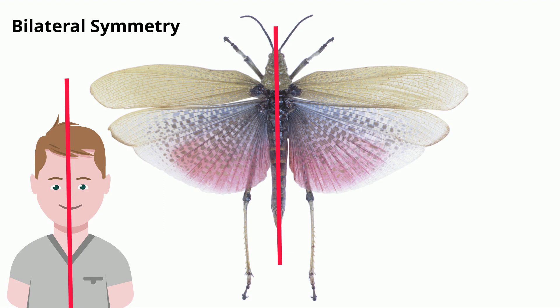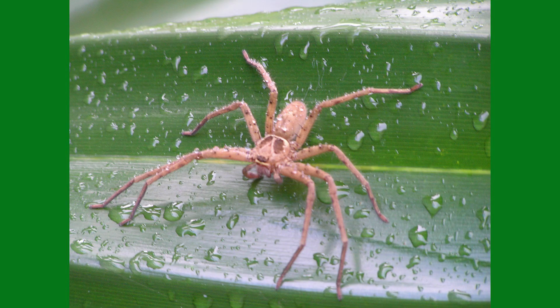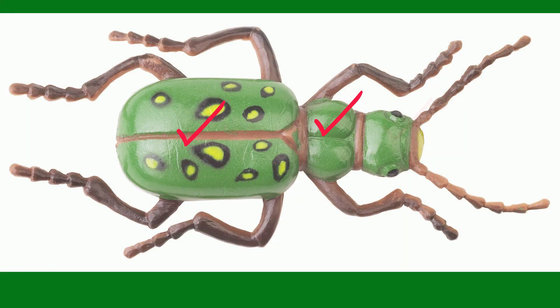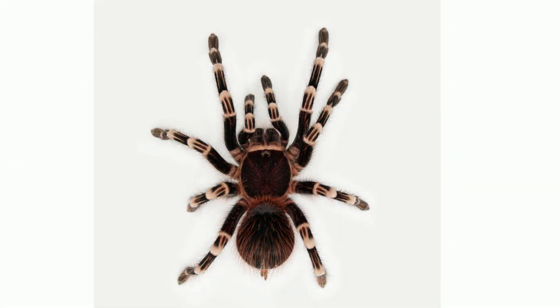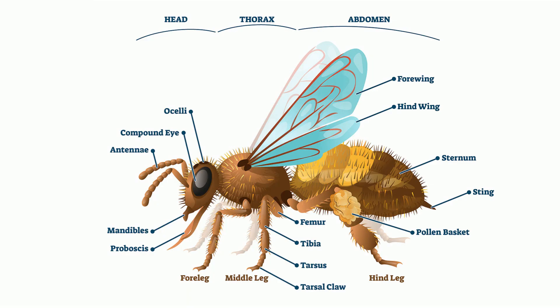Bodies with regions. If you take a look at a spider or an insect, you will notice that their body is made up of more than one segment. A spider has two segments, and an insect has three: a head, thorax, and abdomen.